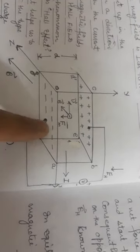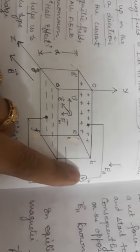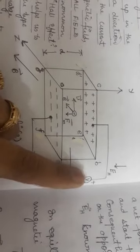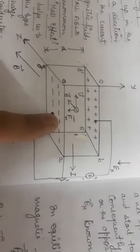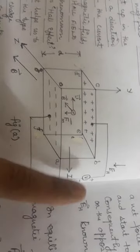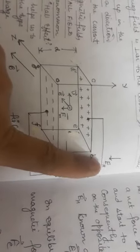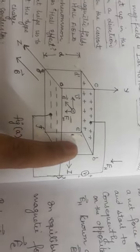If I connect a voltmeter between the upper face and the lower face, the voltmeter will show a reading, which simply indicates that an electric field — or potential difference — has been set up between the upper and lower faces of this metallic strip. Understanding the origin of this Hall field or potential difference is the main purpose of this experiment.